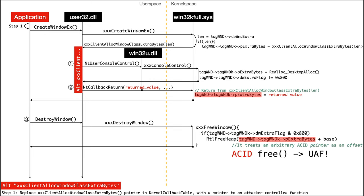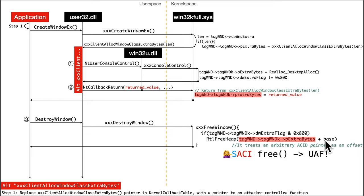It treats pExtraBytes as an offset, so now what we've got looks like an ACID free. We know from previous sections that an ACID free can lead to a use-after-free. Because this is pseudocode and I haven't fully reverse engineered everything, I'll call it more like a 'sassy free.' If it truly allowed freeing anything anywhere in kernel space it'd be ACID — but at minimum we know you can free anything on this kernel desktop heap used for GUI window allocations.